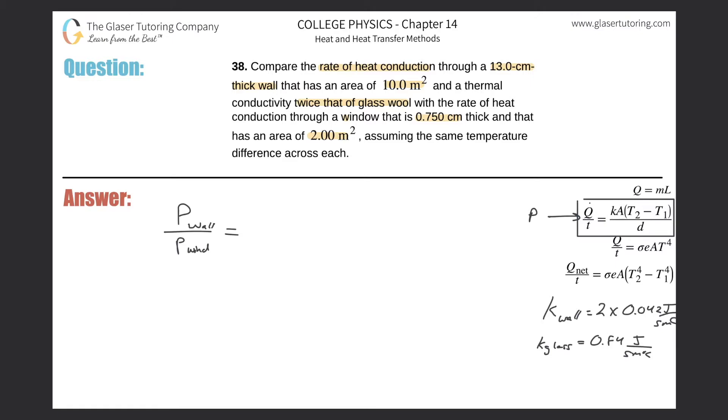Now we can substitute in each of the formulas for each of the powers. So this is the k of the wall multiplied by the area of the wall multiplied by the change in temperature of the wall, all divided by the thickness d of the wall. Same thing now. Let me put a big old division sign there.